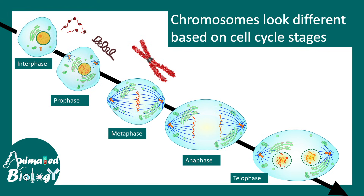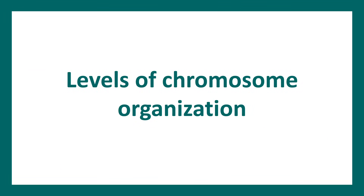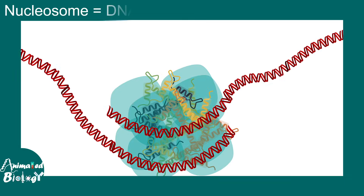Overall, the appearance of a chromosome is highly dynamic. Just like you don't look the same as a teenager versus a young or mature person, chromosomes don't look the same always. So let's look at the levels of chromosome organization. At the simplest level, we can see nucleosomes.